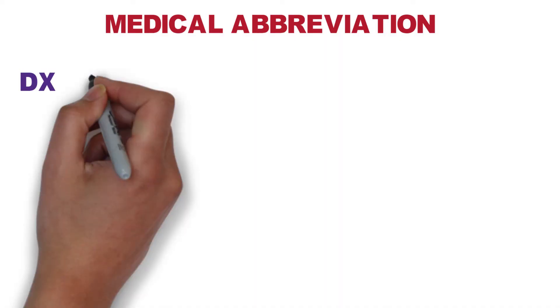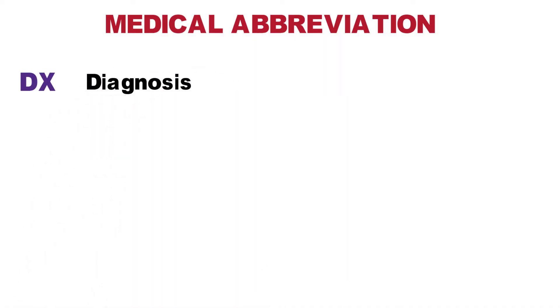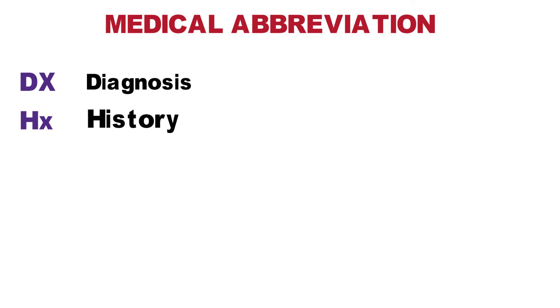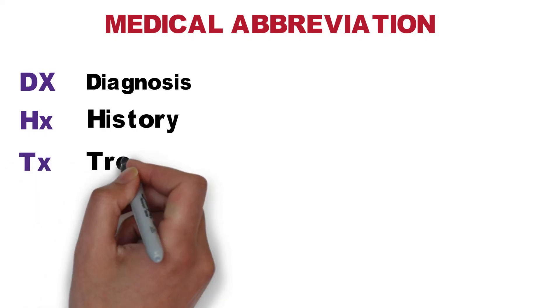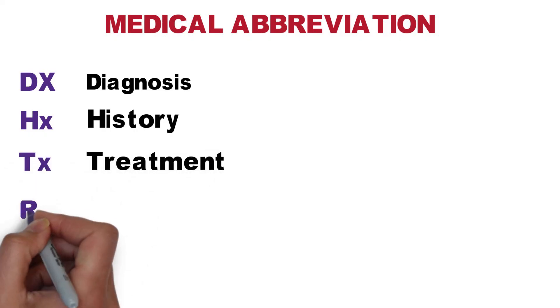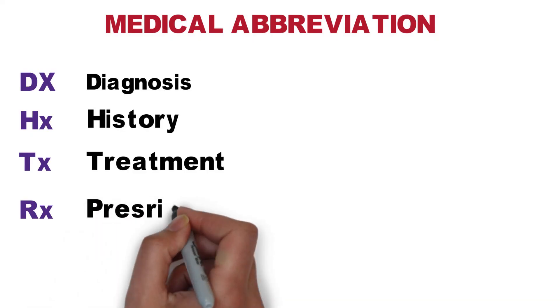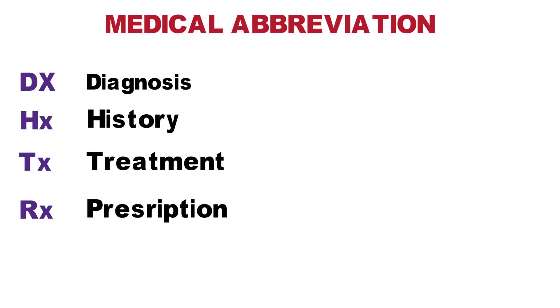The next type of medical abbreviations: DX is diagnosis — so if they have a diagnosis of stroke or heart failure. HX means history — they have a history of stroke or a car accident, etc. TX is treatment. And RX is one of the most common ones — you might see it on a prescription pad because it means prescription.